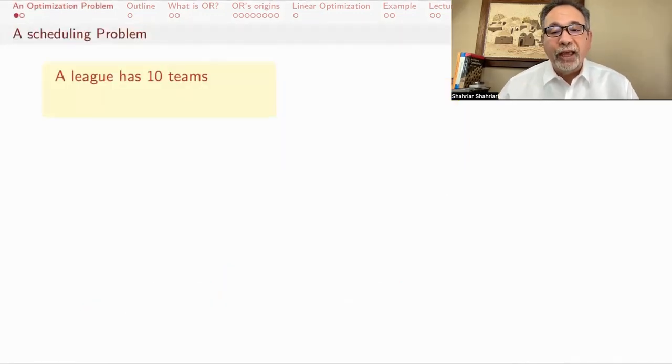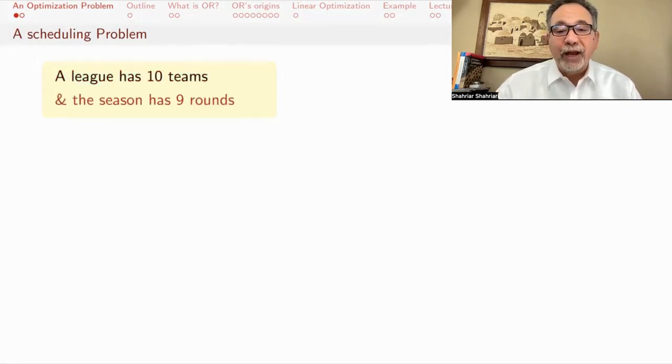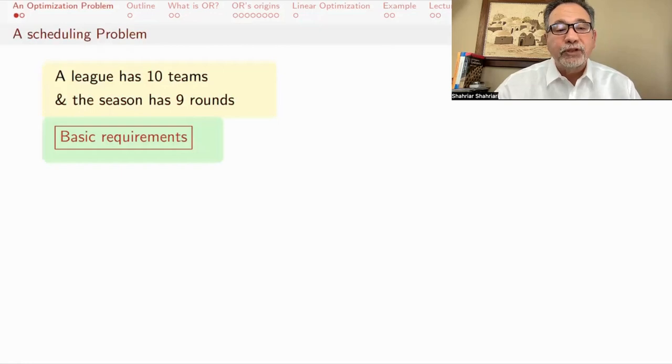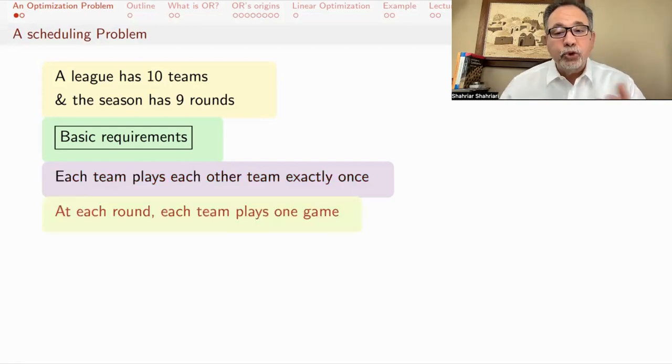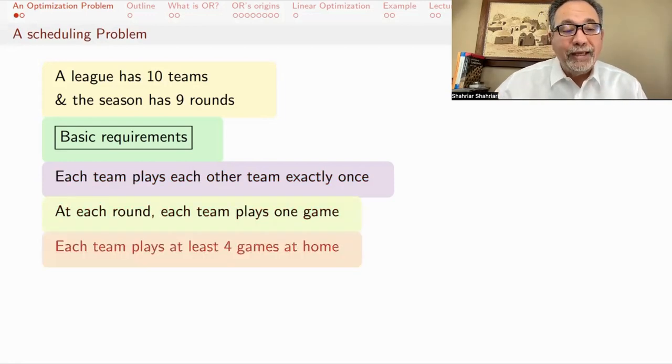I'm going to start with a problem to whet your appetite and show you the kinds of problems that one does using operations research. A league has 10 teams. This is a soccer league and the season has nine rounds. There's some basic requirements for scheduling this league. The first one is that each team plays each other team exactly once. Each team must play at least four games at home.